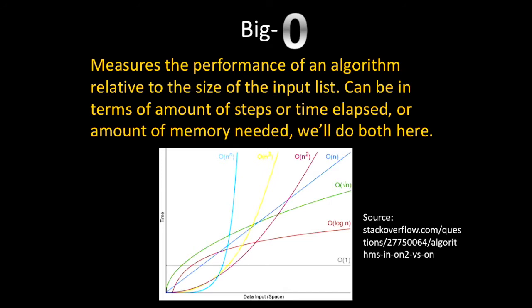When we analyze the memory and time efficiency of an algorithm, we use a notation called Big O, which measures the performance of an algorithm relative to the size of the input list. The performance can be measured in the amount of steps the algorithm makes, the amount of time elapsed, or the amount of memory needed. We will do both a time and memory analysis here. In the visual, we see different relationships an algorithm's performance can have — in this case time — with the size of the input list. Some algorithms have a logarithmic relationship, others have a constant relationship, some have a linear relationship, and so on.